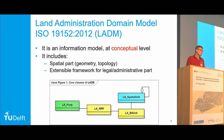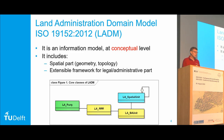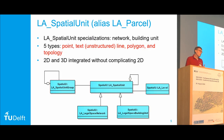What is the Land Administration Domain Model? It's an ISO standard since 2012 — an information model describing the main concepts. It includes a spatial part: geometry, topology, and surveying. And it includes a legal part about the rights, restrictions, and responsibilities that parties have on spatial units. RRR means Right, Restriction, Responsibility — the relationships between land and people. A parcel, or spatial unit, is one of the key concepts.